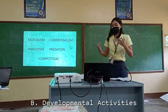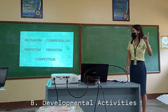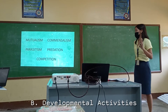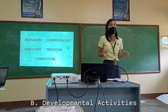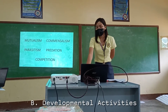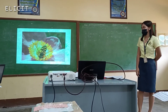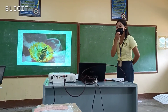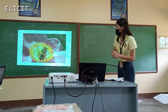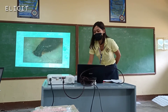We have just uncovered the five ecological relationships, which are mutualism, parasitism, commensalism, competition, and predation. So today we will know more about these relationships. I have here some pictures and I want you to describe what you can see in the image. Jericho, how can you describe the first picture? Very good. The bee gets nectar from the flower.